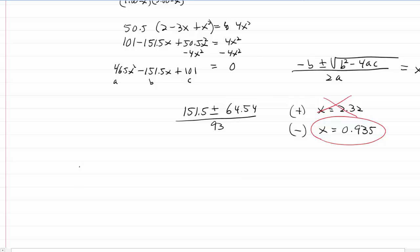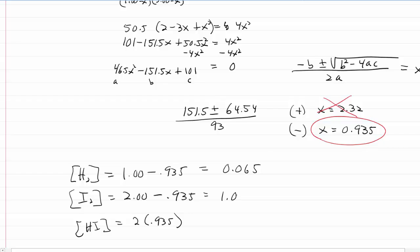And so the question was, what are the final concentrations? So we'll say the concentration of H2 is 1 minus .935, which is 0.065. The concentration of I2 is going to be 2 minus .935, which is 1.065, and the concentration of HI is 2X, and that's then 2 times .935. So H2 is 0.065, I2 is 1.065, and the HI comes out to 1.87.